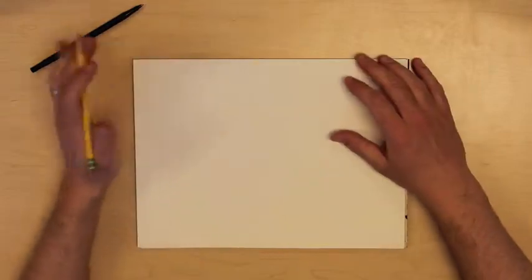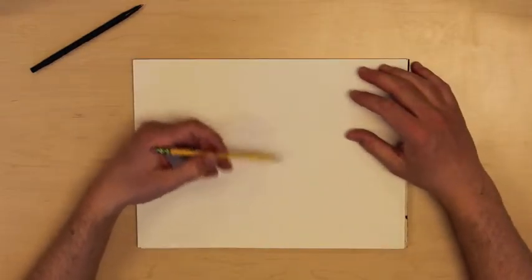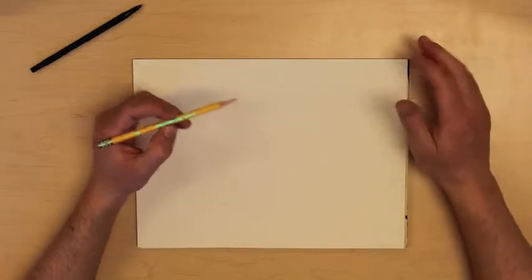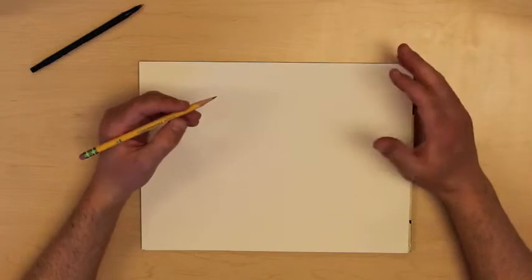Line weight refers to basically how hard you're pressing down with the tool, or maybe how many times you repeat a line. You can go from a light medium to a heavy line weight, and each thing kind of serves its own purpose.